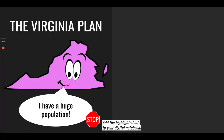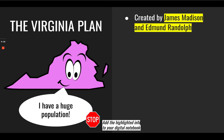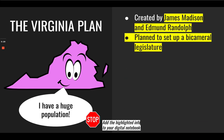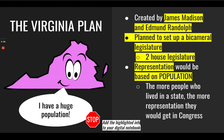The Virginia Plan: created by James Madison and Edmund Randolph. This plan set up a bicameral, or two-house, legislature. Representation would be based on population — the more people who lived in a state, the more representation they would get in Congress.